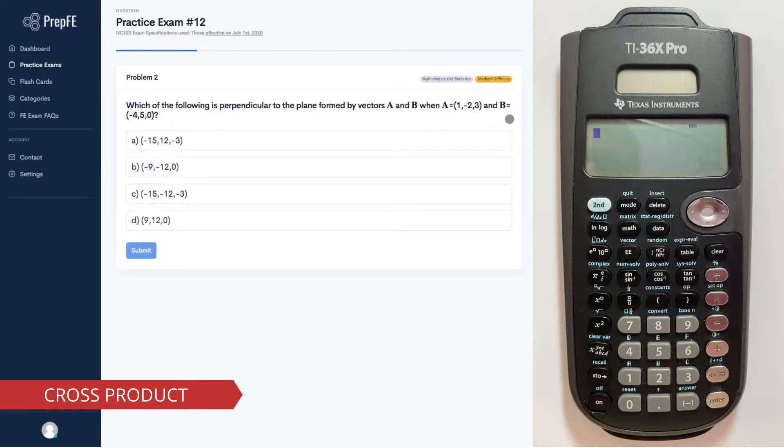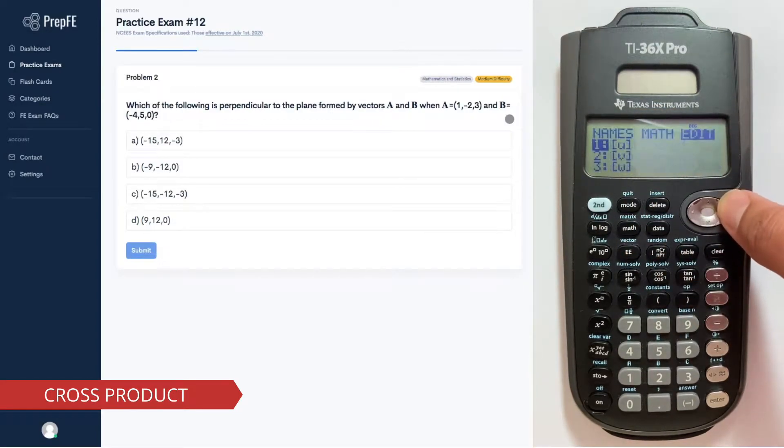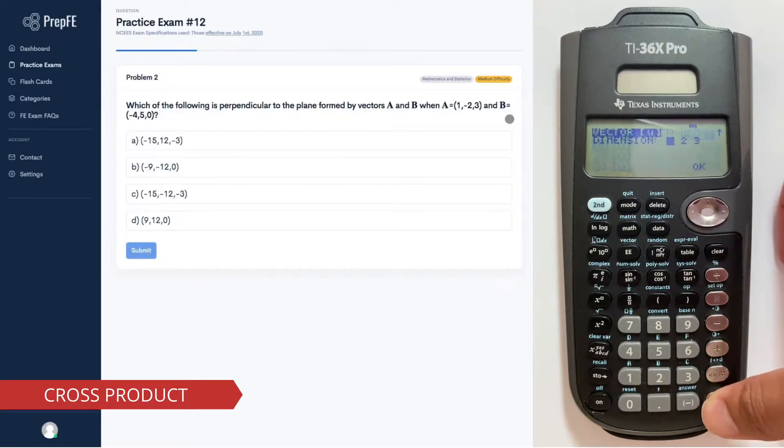To do the cross product in your calculator, we first gotta enter the two vectors. We go to Second, Vector, then we go to Edit, then hit Enter.